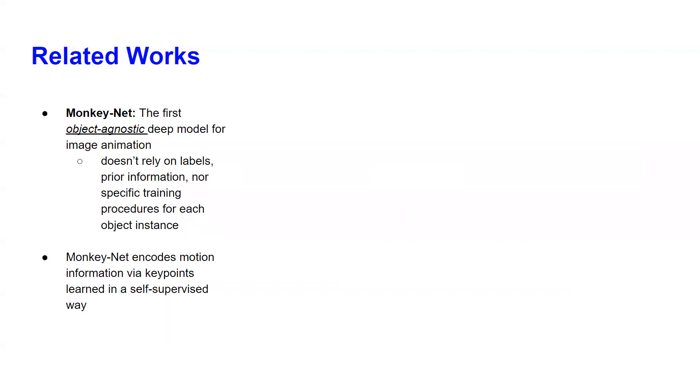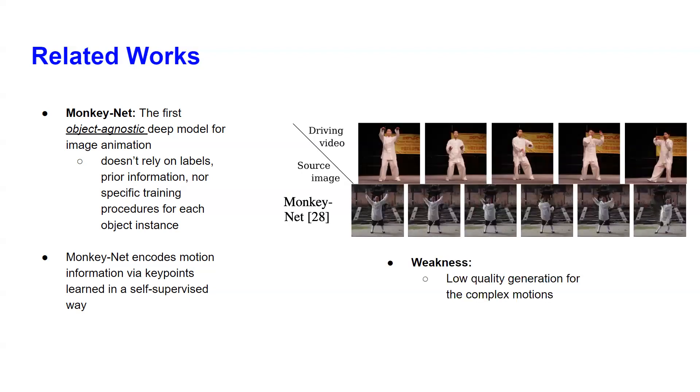Before first-order motion model, MonkeyNet from the same author was presented in CVPR 19, which was the first object-agnostic deep model for image animation. It doesn't rely on labels or prior information and doesn't need any specific training procedure for each object instance. MonkeyNet encodes information via key points learned in a self-supervised way, but it has some limitations which are it generates low quality animations when the motion change is big.